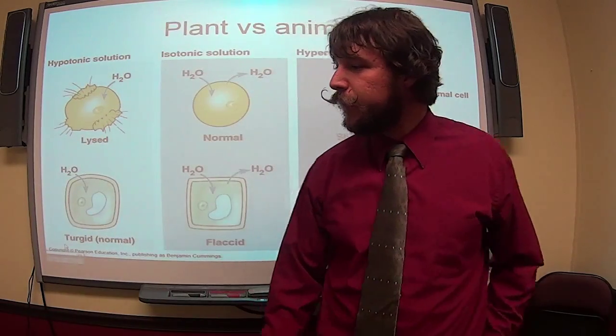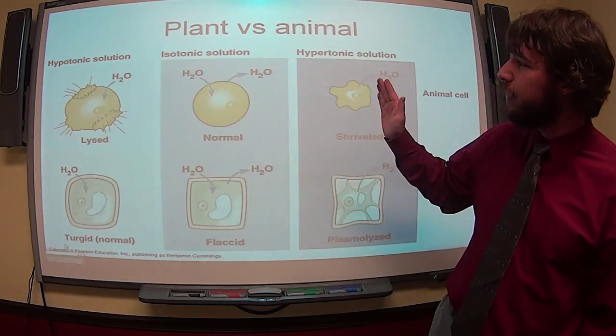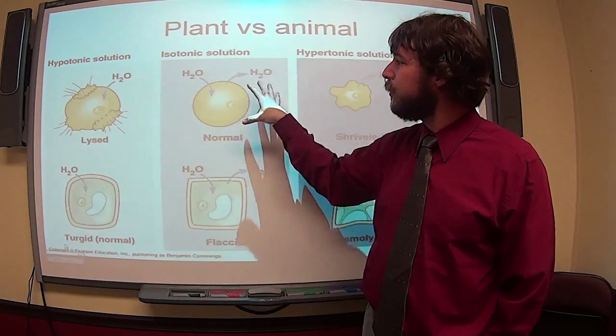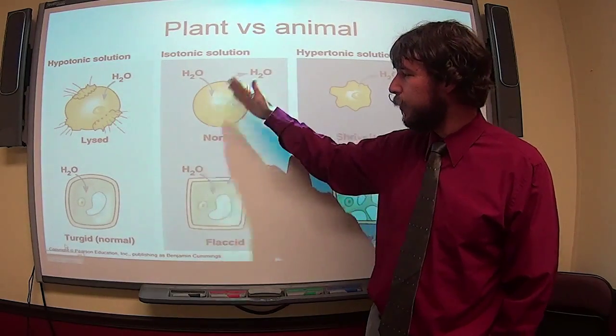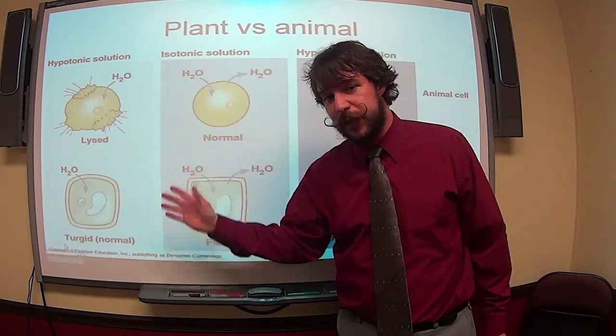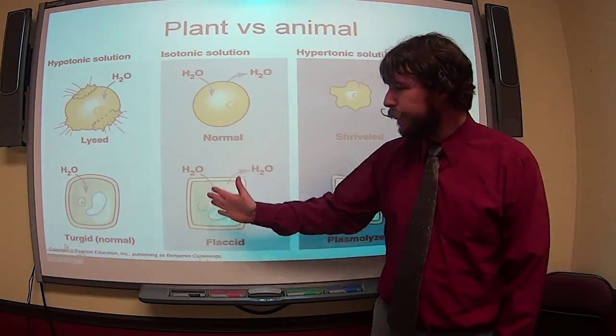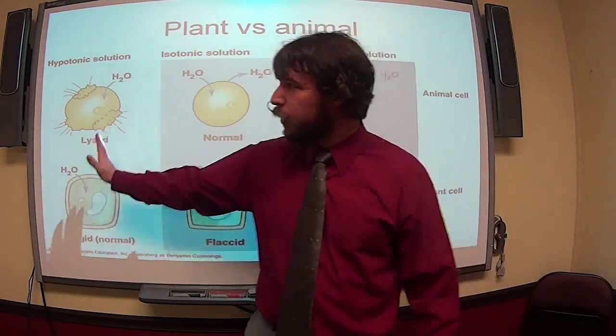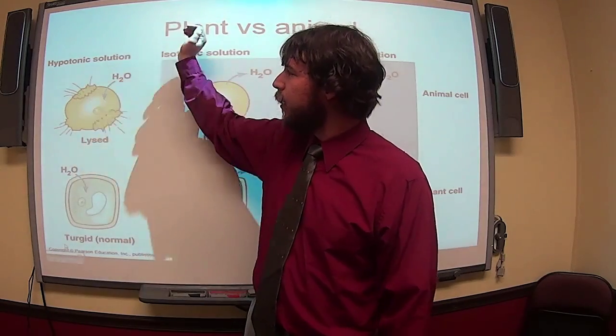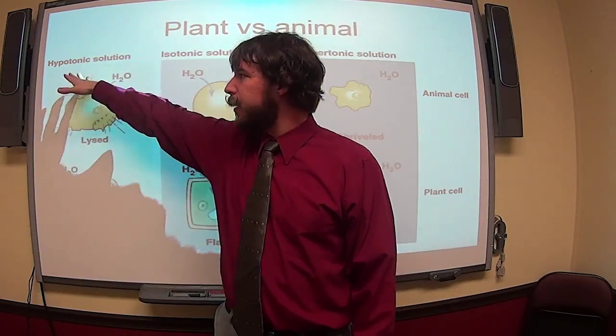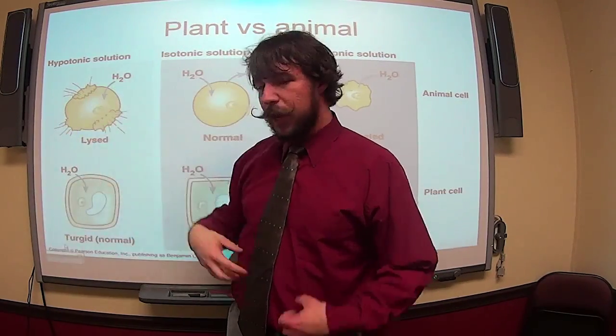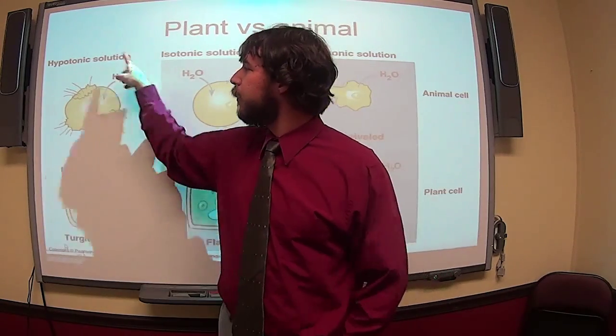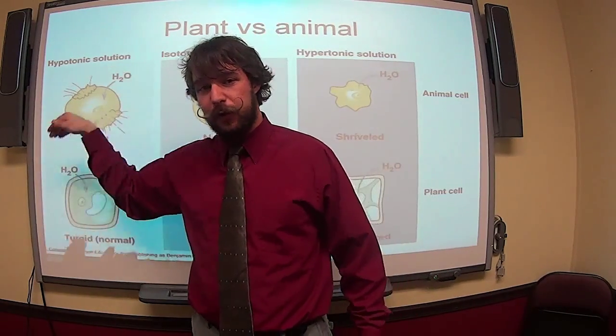So these are how animal cells react in those three different types of solutions. And here is how it's different though for a plant cell. You'll notice again, you put the animal cell in that isotonic solution, water moves in and out as normal. The cell stays happy. Plant cells though, they're not very happy because plant cells want to be in this hypotonic solution. So the animal cell, hypotonic solution, hypo below, cell swells like a hippo, could explode because the concentration is lower so water enters.